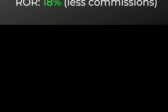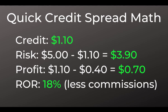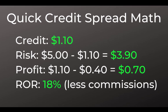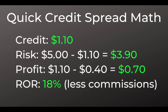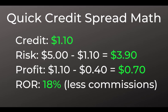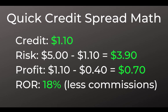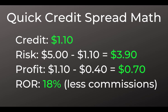Let's do some quick credit spread math to understand the risk-reward here. I received $1.10 credit for the trade. Since this was a $5-wide spread, the risk is the width of the spread at $5 minus the credit, so my max loss is $3.90. The profit was the difference between the credit I received — $1.10 — minus what I bought it back for, which was 40 cents. So my profit on this trade was 70 cents, less commissions. Since I'm risking $3.90 and was able to book 70 cents, that's just under an 18% gain in about an hour on my risk. That's my return on risk. Obviously there are some commissions that will ding a little bit out of that, but that's what I got.